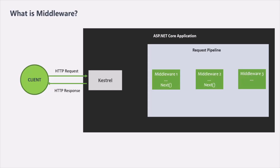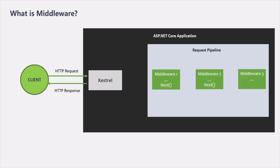When a request is received on the Kestrel server, Kestrel creates an HTTP context object which contains a request and a response object. This HTTP context object is then passed to the first middleware in the request pipeline. There, the middleware can manipulate the request and response objects of the HTTP context. A middleware can also execute other code as well — it need not always be about the request and response object — but mostly it is used to manipulate request or response before sending the response to the client.